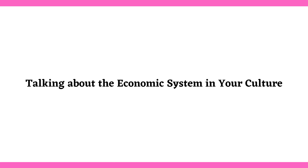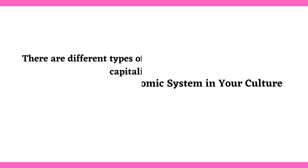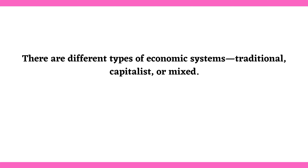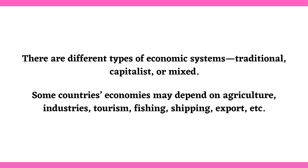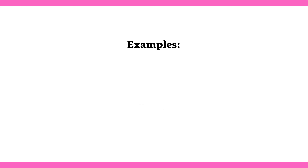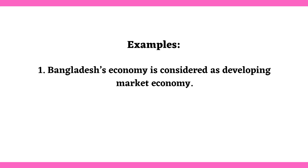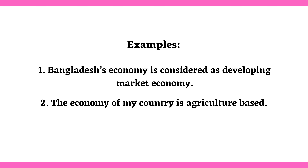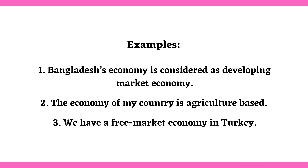Talking about the economic system in your culture. There are different types of economic systems: traditional, capitalist, or mixed. Some countries' economies may depend on agriculture, industries, tourism, fishing, shipping, export, etc. Examples: Bangladesh's economy is considered a developing market economy. The economy of my country is agriculture-based. We have a free market economy in Turkey.